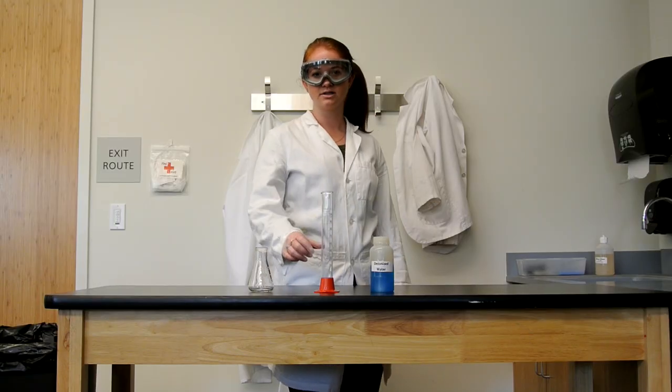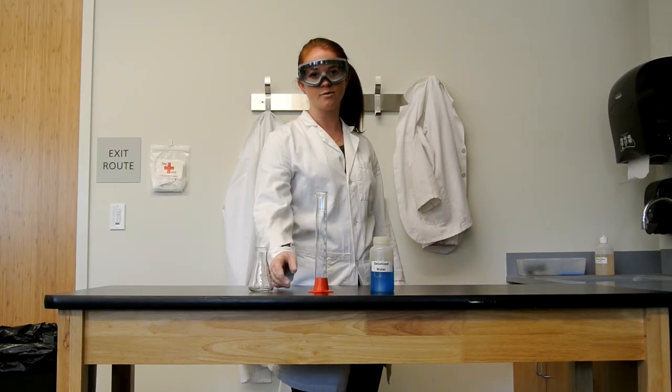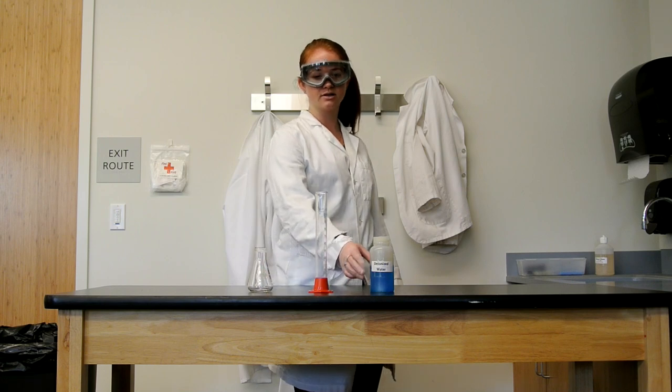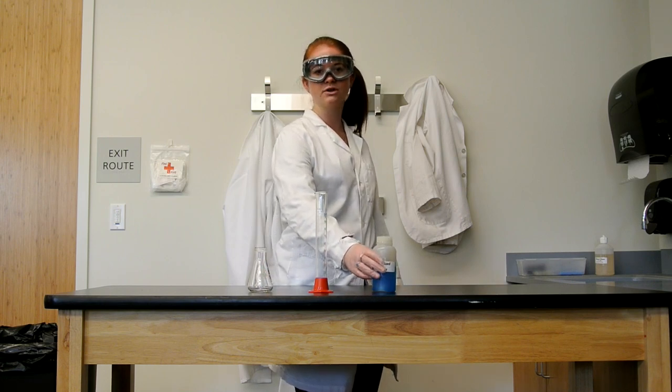Now, we're going to discuss how to measure liquids. You'll need a graduated cylinder, an Erlenmeyer flask, and your solution. Today, we're using deionized water mixed with food coloring so that you can see it.